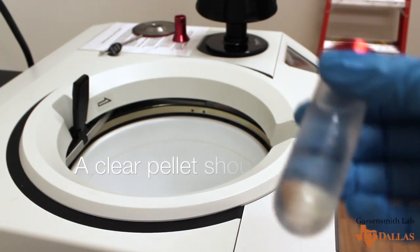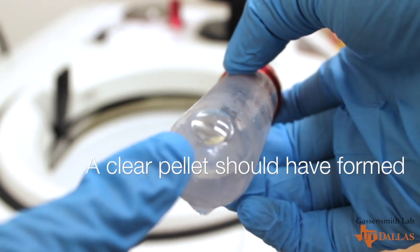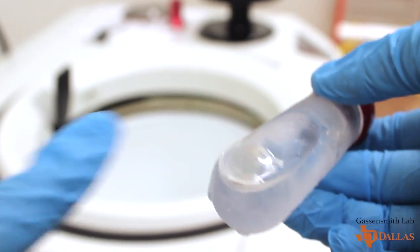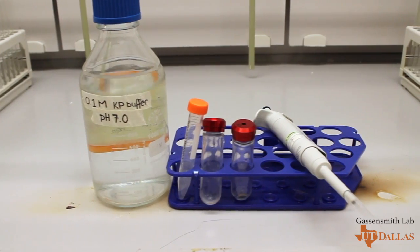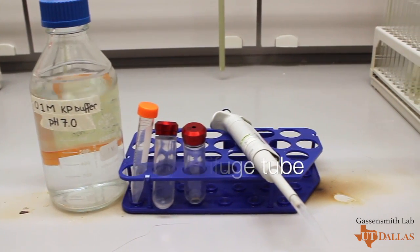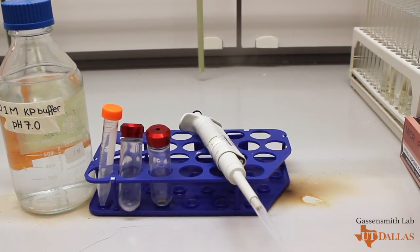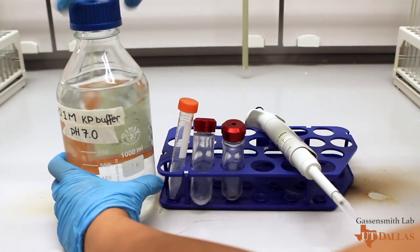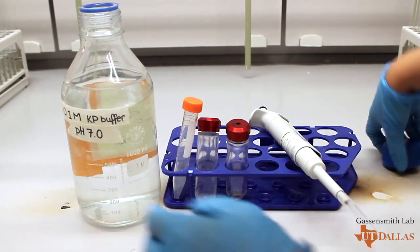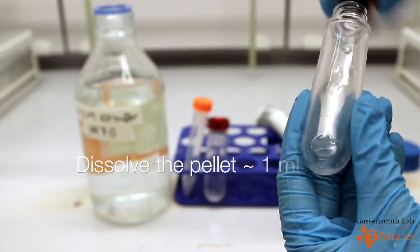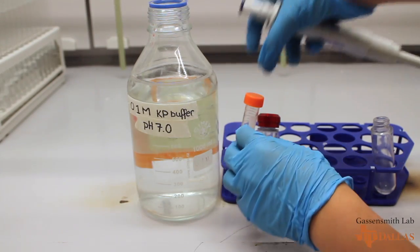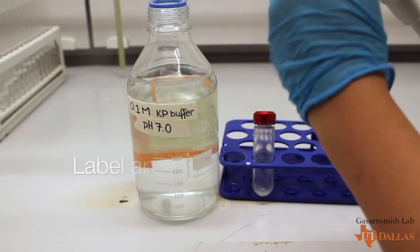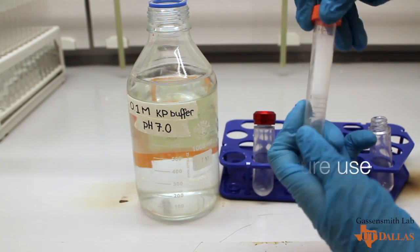Once it's done, a clear pellet should have formed at the bottom of the tube. For the next step, we will need KP buffer or any buffer of your choice, a 15 milliliter centrifuge tube, your pellets, and a 1 milliliter pipette. Dissolve the pellet using as little as 1 milliliter buffer and shake. Once completed, label and store your purified Q-beta.